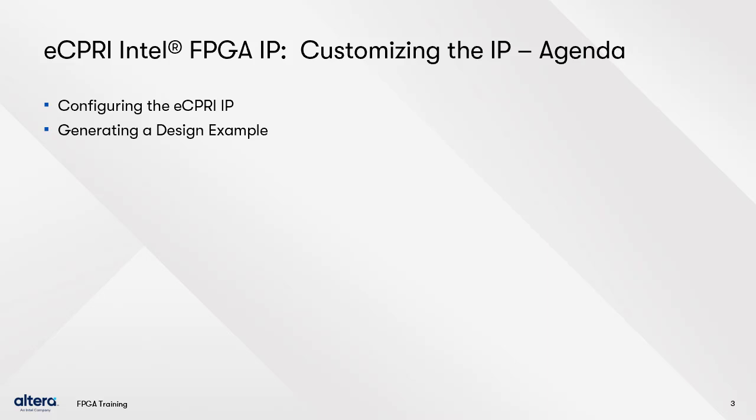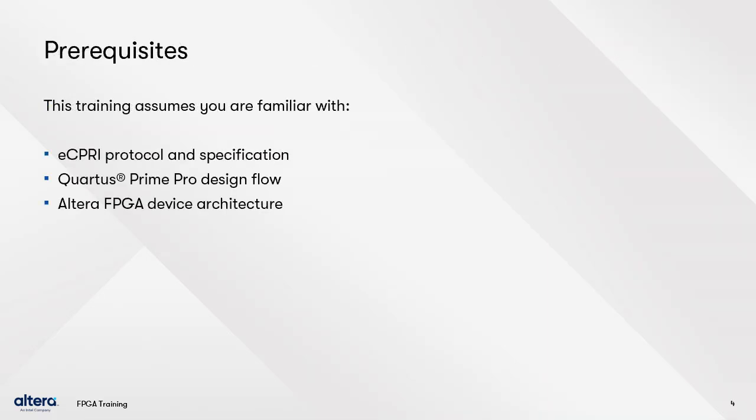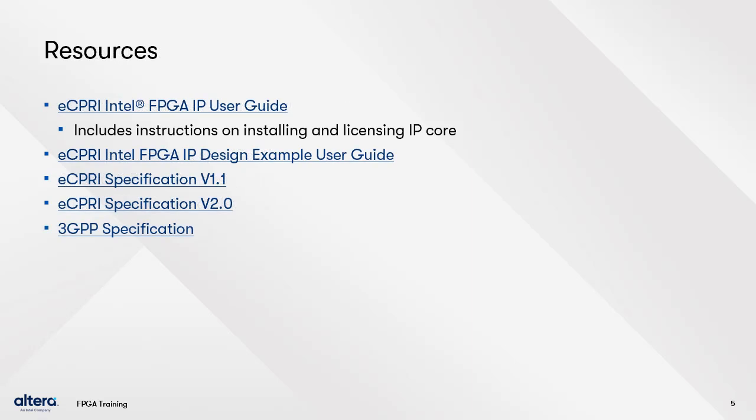We will begin with a section on how to configure the eCPRI IP, covering the parameters that make up the IP core. Then we will finish with a section on the steps to generating the design example and how you can run it in simulation and in hardware. This training assumes a good understanding of the eCPRI protocol, familiarity with the Quartus Prime Pro Software Tool Suite, and a good understanding of Altera FPGA architecture is helpful. If you have further questions on the 3GPP or eCPRI spec, here are links to some resources.